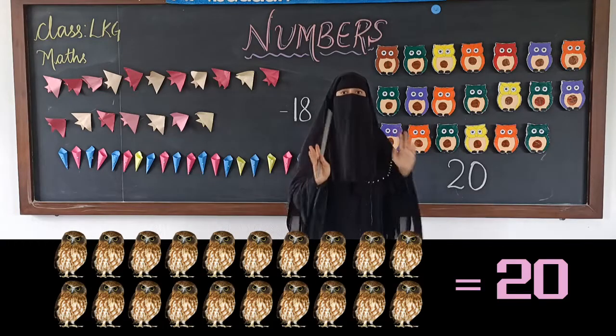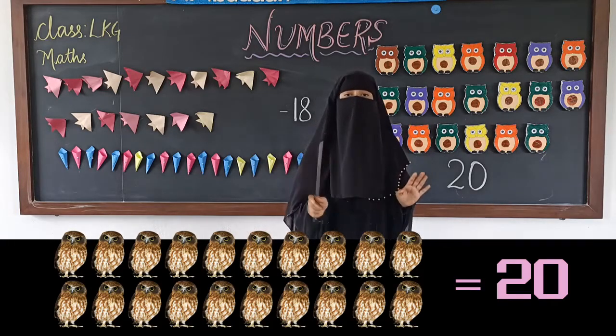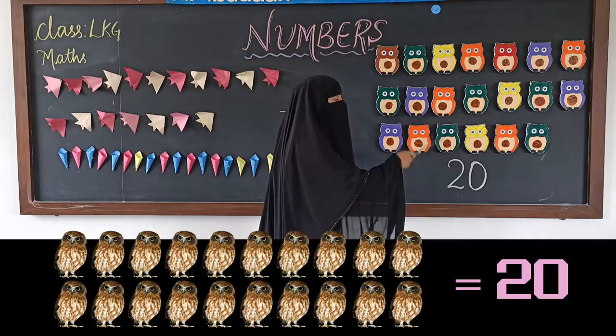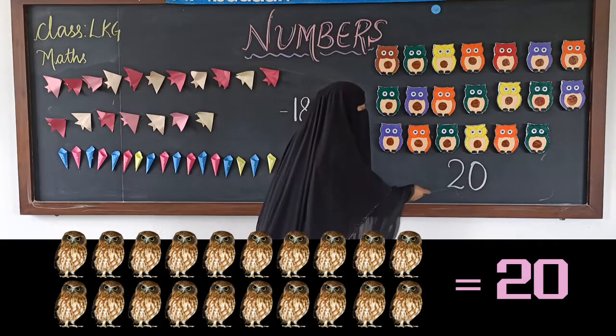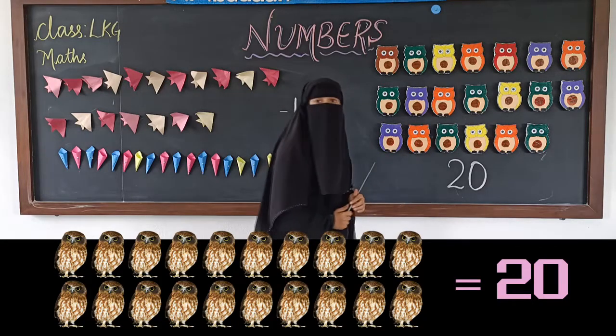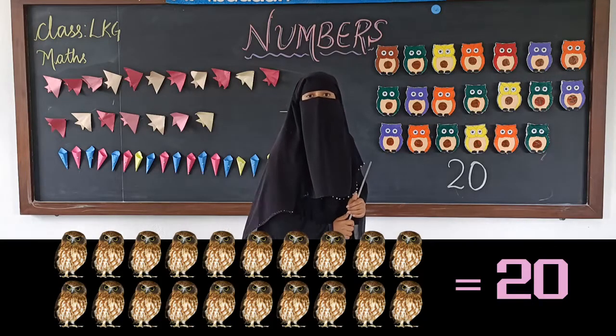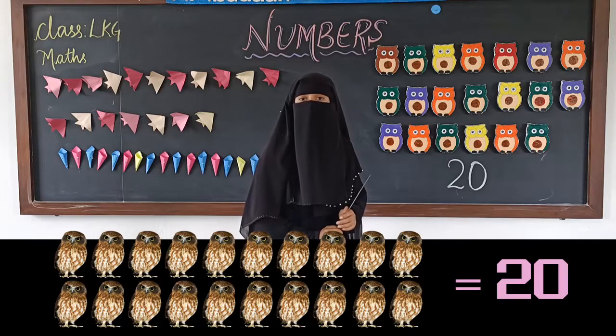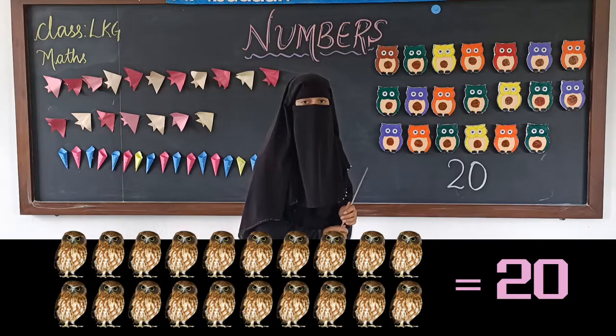There are 20 owls altogether. How many? 20. 20 owls are there. So 2 and 0 makes number 20.